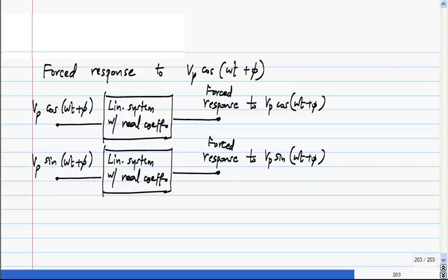do is to superpose these two inputs, multiplying this by one and this by j which is square root of minus one. And when we do that, my input becomes Vp e^(j(ωt + φ)).